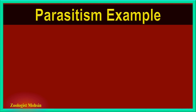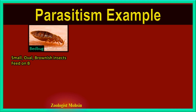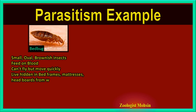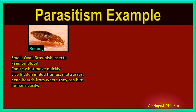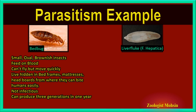Let's understand ectoparasitism with the example of bed bugs. Bed bugs are very small, oval-shaped, brownish insects which feed on the blood of humans or other animals. They cannot fly but can move quickly on floors, walls, and ceilings. They remain hidden in bed frames, mattresses, and headboards, from where they can bite humans easily. They are not infectious but can reproduce three generations in one year. They suck blood from outside the body, which is why they are ectoparasites.